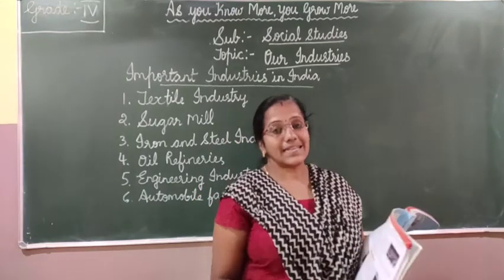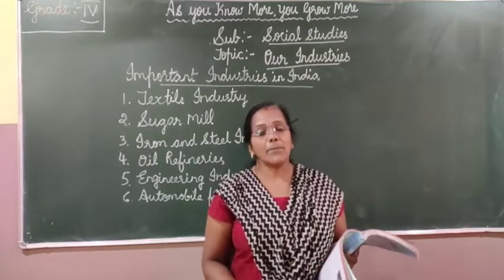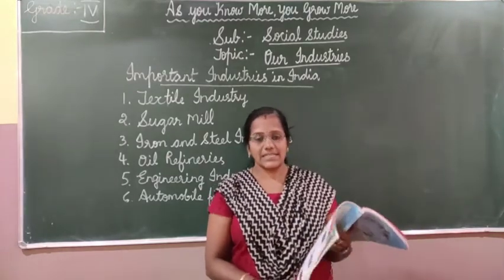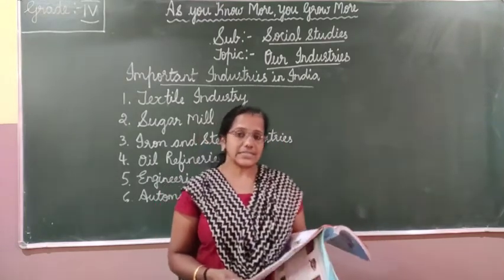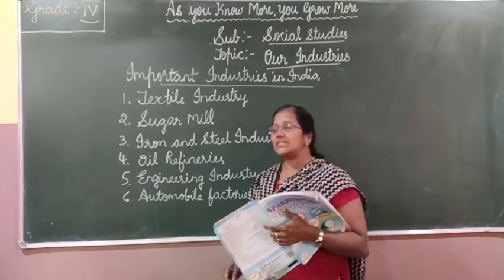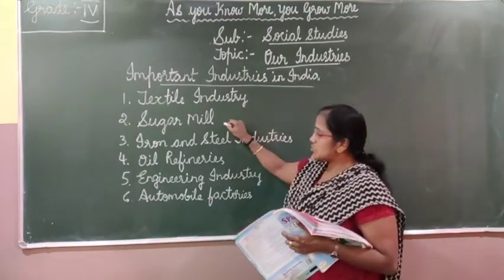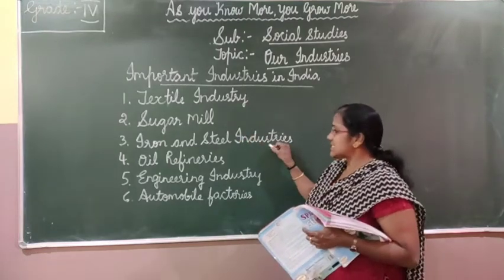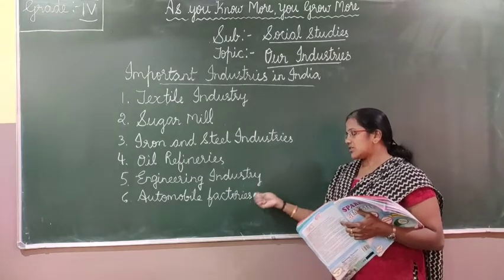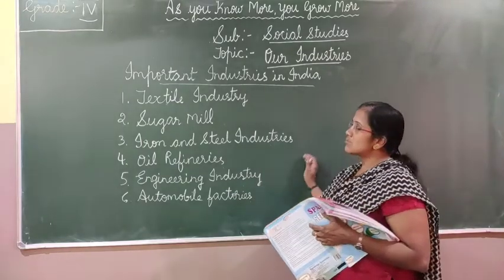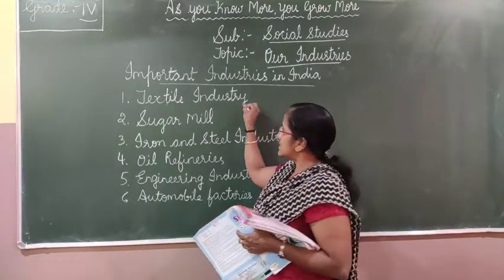So that was the recap of the previous class. Now we will go on to some important industries in India. Some of the important industries are: textile industry, sugar mills, iron and steel industries, oil refineries, engineering industry, and automobile factories. Let us learn about these one by one.